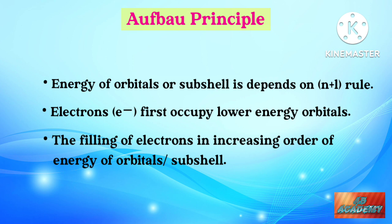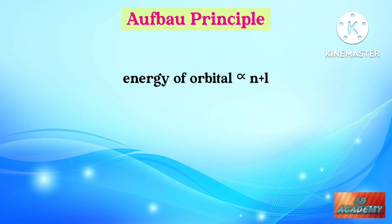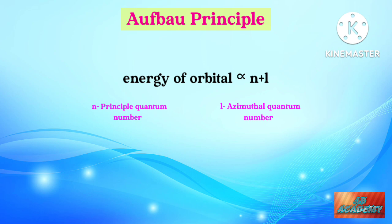To find out which orbital has more or less energy, we use the n plus l rule. The energy of orbitals is directly proportional to n plus l, where n is the principal quantum number and l is the azimuthal quantum number. When n equals 1, it is the K shell. When n equals 2, it is the L shell.